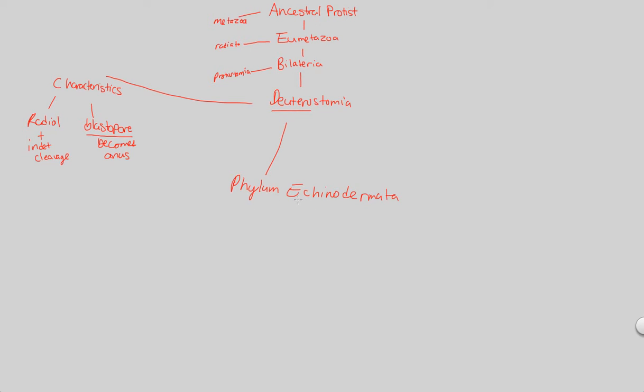In this phylum, we're going to have our classic example would be anything that is of a sea star, something like a sea star, or a lot of people just refer to these as starfish. That's the more common name. Sea star is the more official name. And this is shown in figure 33.42.